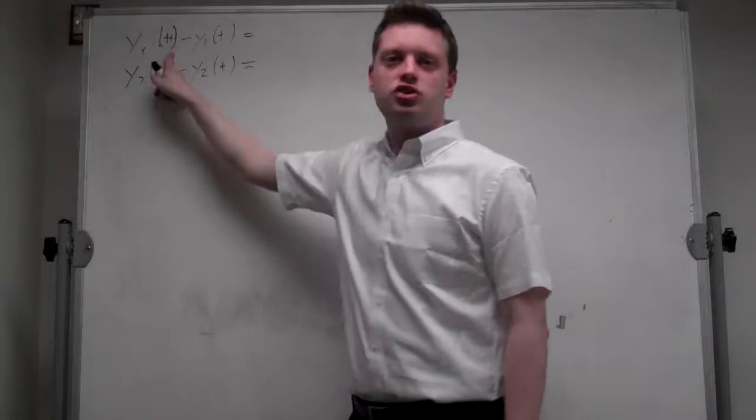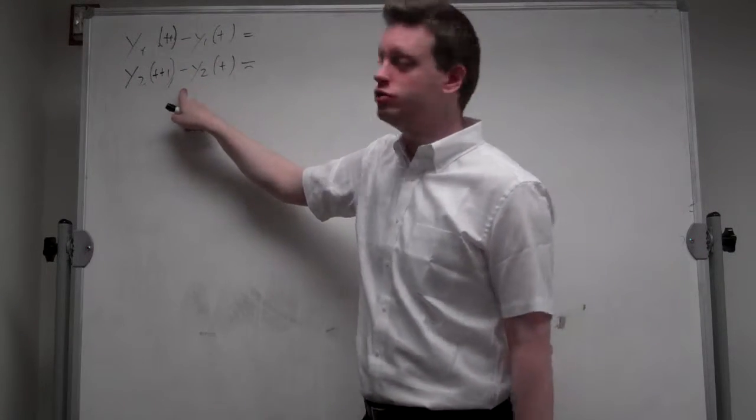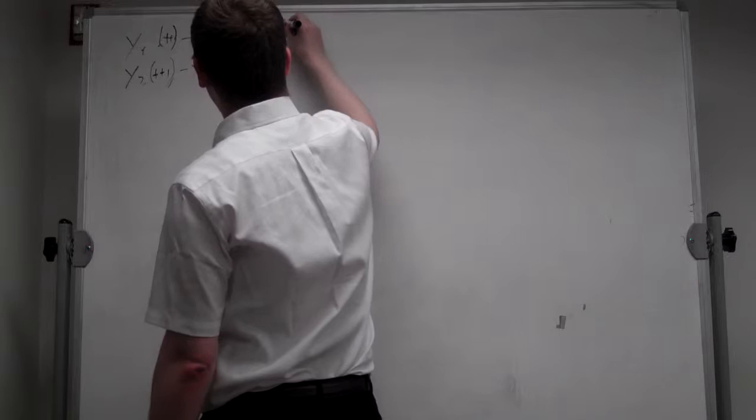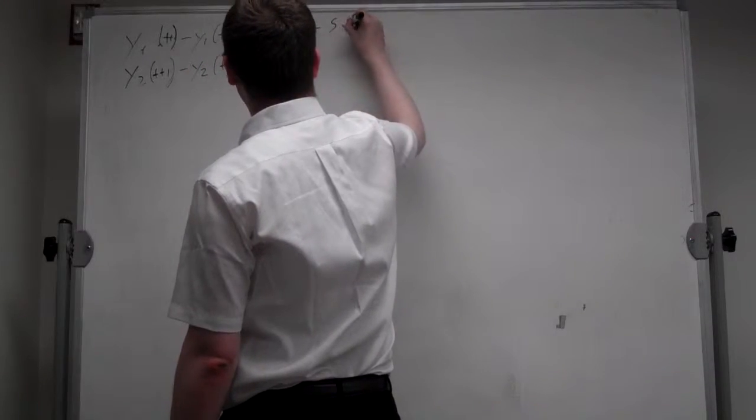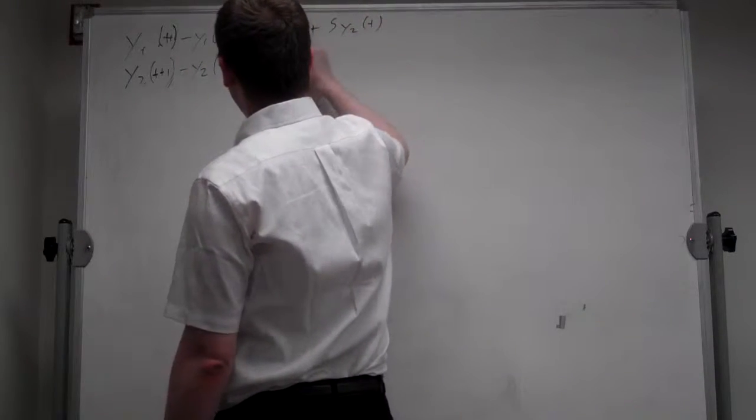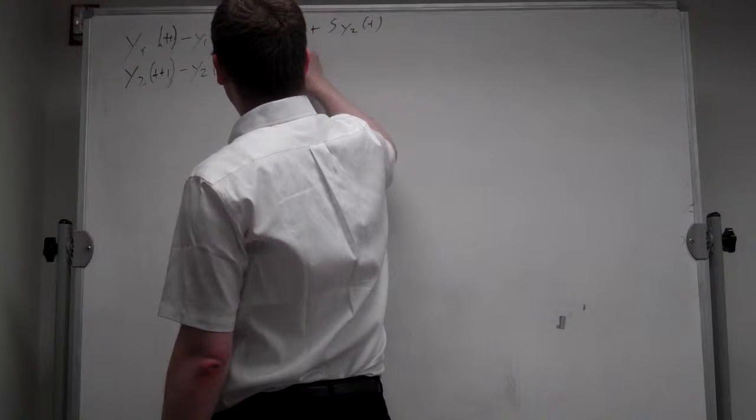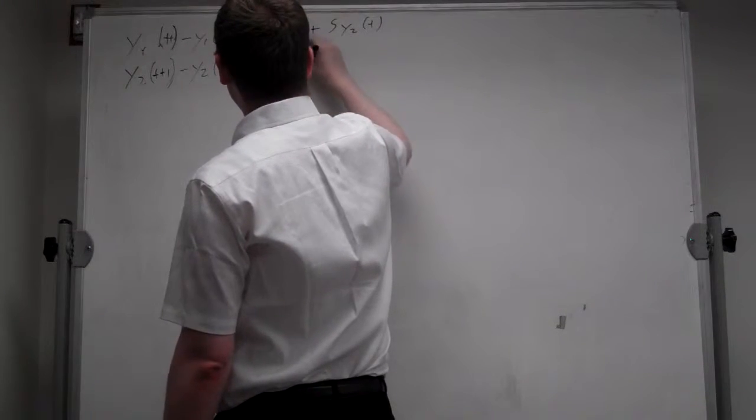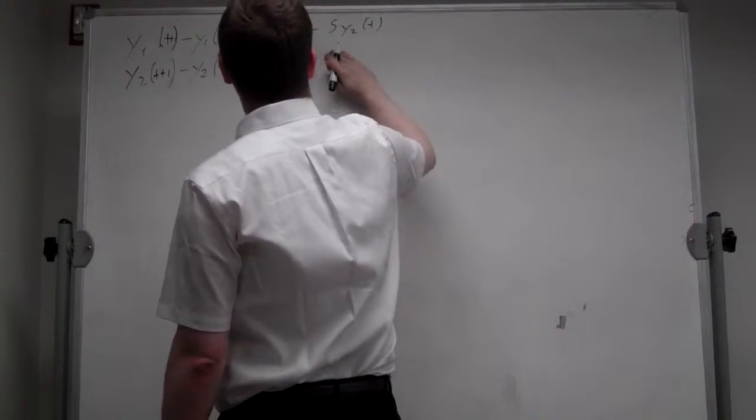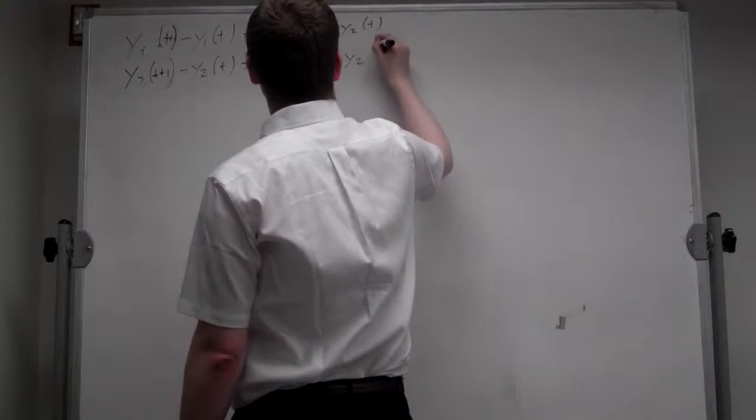which leads to the expression we need. So we have the change in y_1t, so we get y_1t plus 5y_2t, and we got y_1t plus 3y_2t.